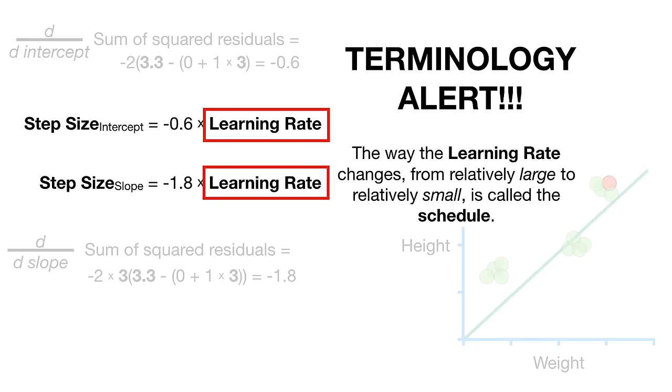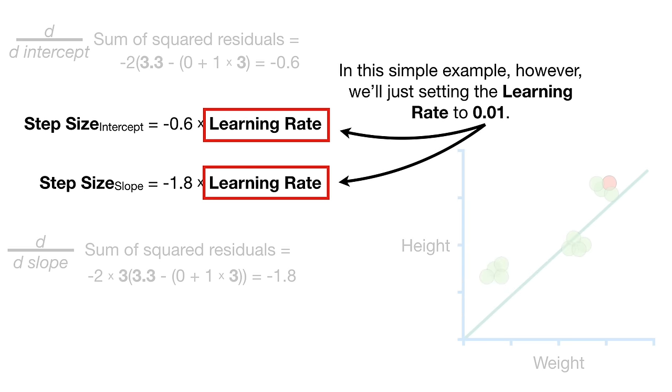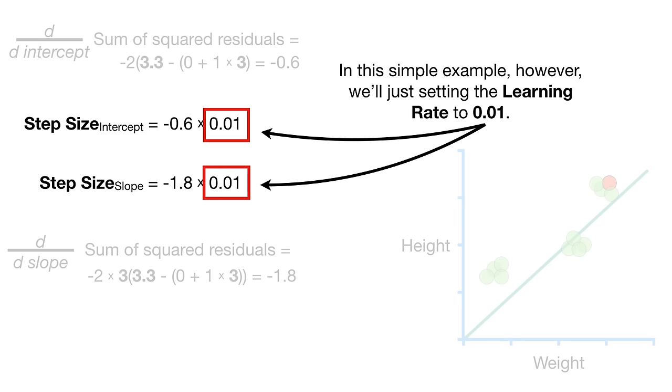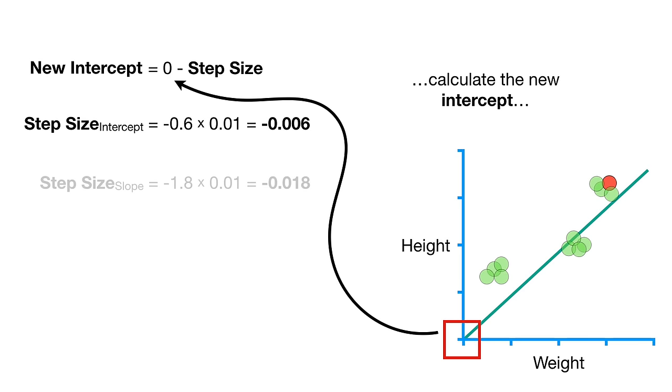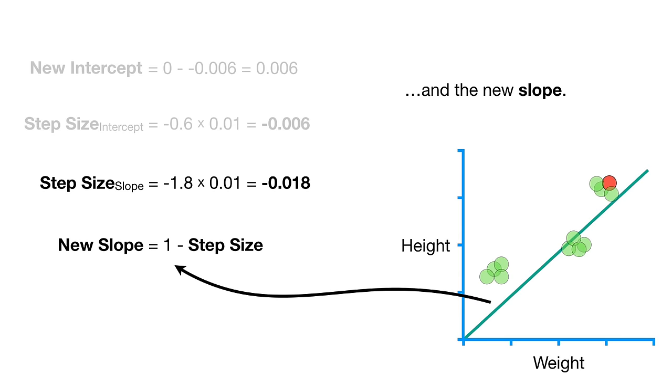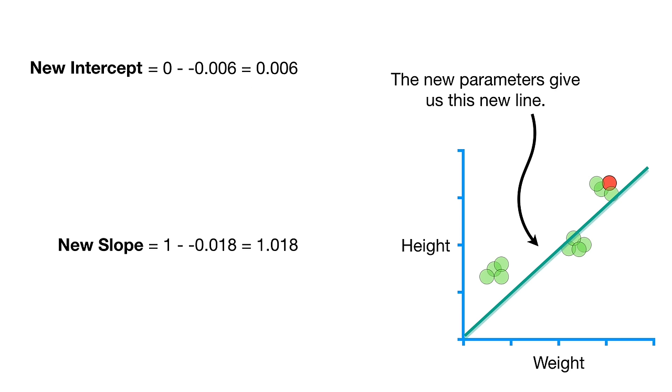Then multiply by the learning rate. Note, just like with regular gradient descent, stochastic gradient descent is sensitive to the value you choose for the learning rate. And just like for regular gradient descent, the general strategy is to start with a relatively large learning rate and make it smaller with each step. And lastly, just like for regular gradient descent, many implementations of stochastic gradient descent will take care of this for you by default.